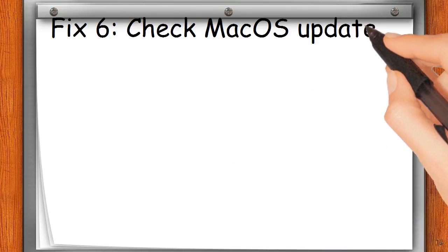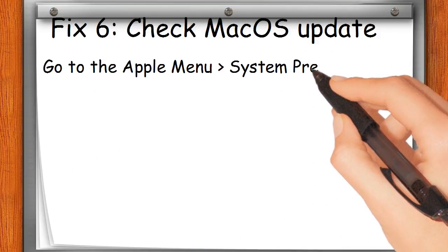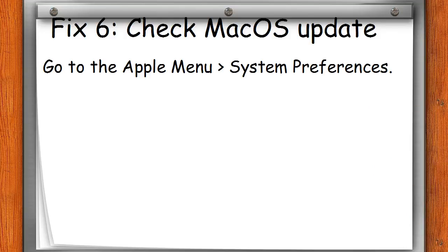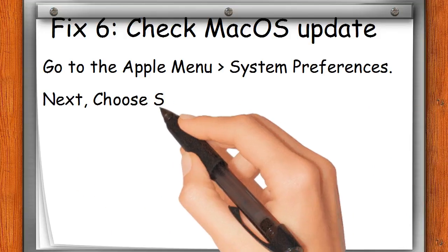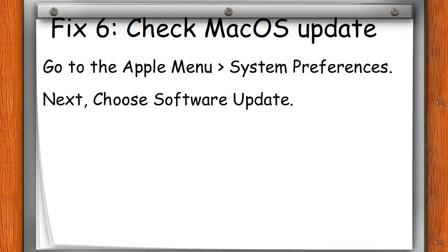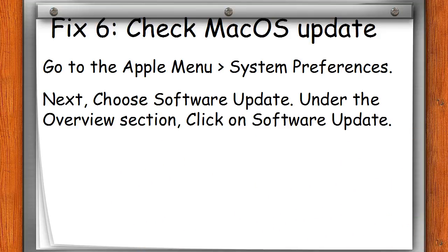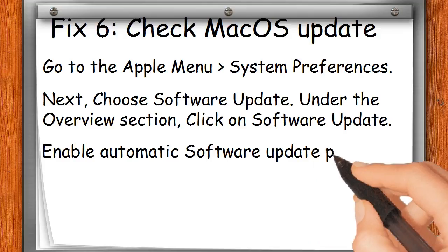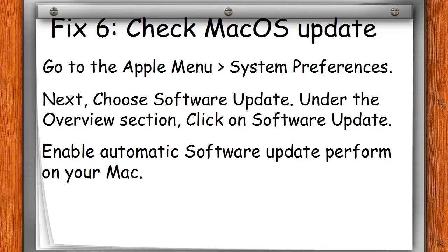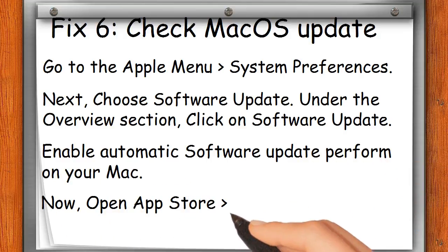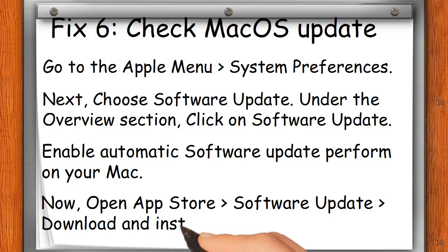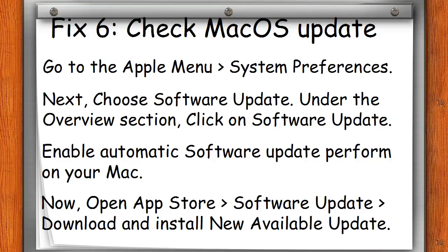Fix 6: Check for a macOS update. Go to the Apple menu, then System Preferences. Choose Software Update. Under the Overview section, click on Software Update and enable Automatic Software Update. You can also open the App Store and go to Software Update to download and install any new available updates.